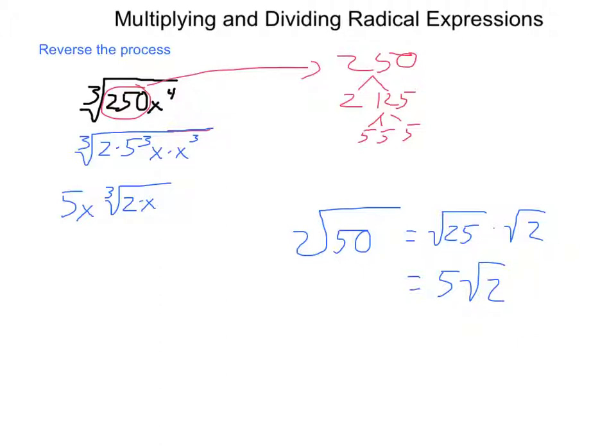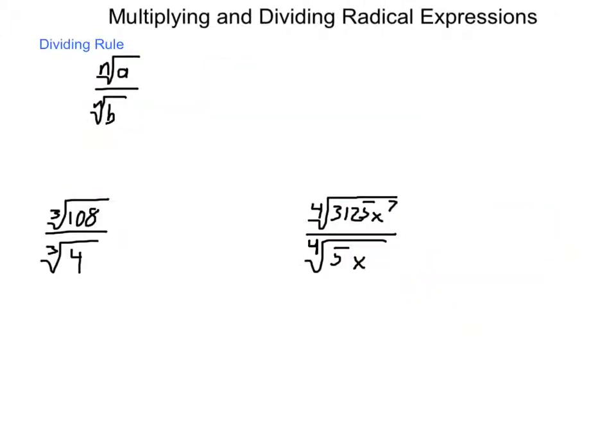Now, we can also look at this from a division. If we have the nth root of a divided by the nth root of b, then what this is going to give us is the nth root of a divided by b. So, we might not be able to take individual pieces, but when combining them, it might make something more useful.